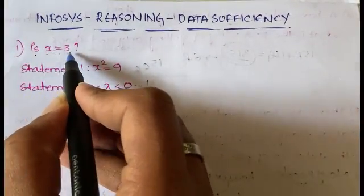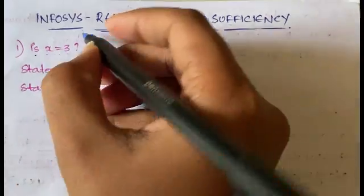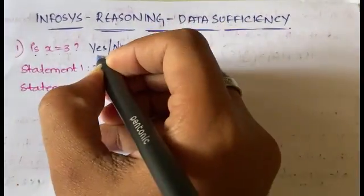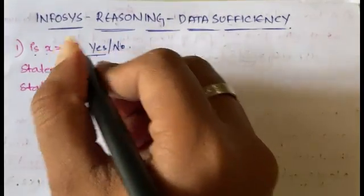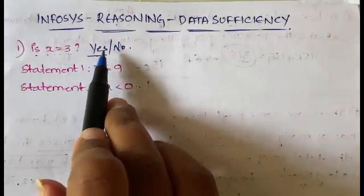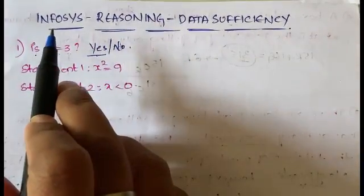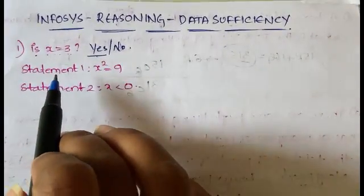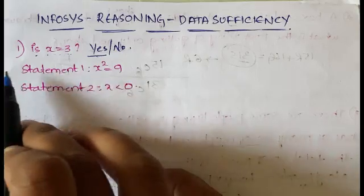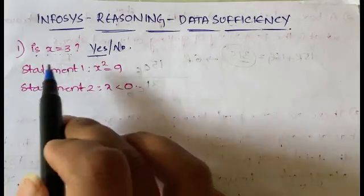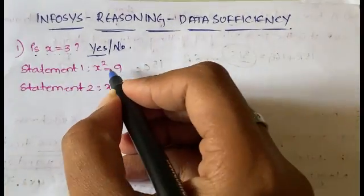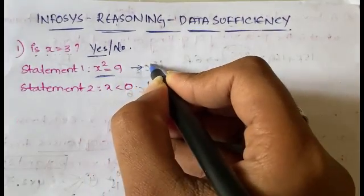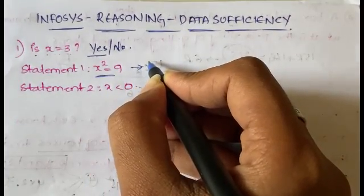The first question is: is x equal to 3? You have to predict whether x equals 3. The answer can be yes or no — it's not mandatory that you get yes. From statement one, x² = 9. From this you can get x = 3, but you also get x = −3, because (−3)² = 9 as well.